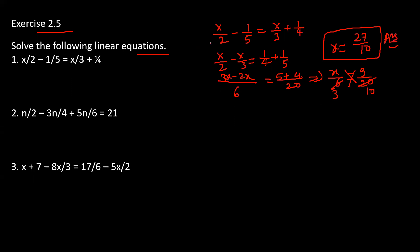You can verify: x by 2 minus 1 by 5 equals x by 3 plus 1 by 4. Substituting x equals 27 by 10 and cross multiplying, LHS equals RHS. So the result is x equals 27 by 10.